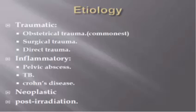The etiology of rectovaginal fistula may be traumatic, inflammatory, neoplastic, or post-irradiation. Traumatic causes include obstetrical trauma, surgical trauma, or direct trauma. Inflammatory causes include pelvic abscess, tuberculosis, or Crohn's disease. In neoplasm, cancer may invade the vagina and rectum. Post-irradiation fistulas occur when a patient with cancer receives radiotherapy, which can cause fistula formation.